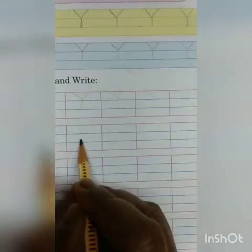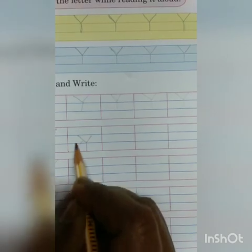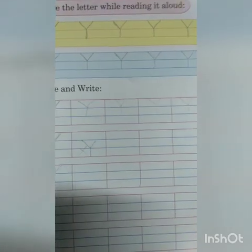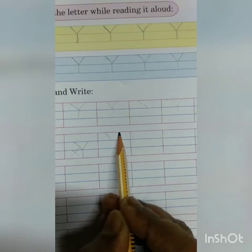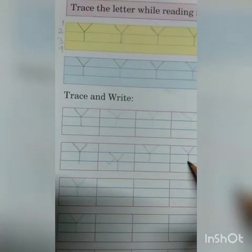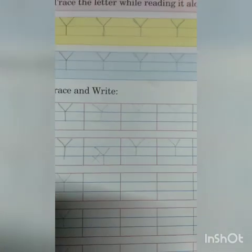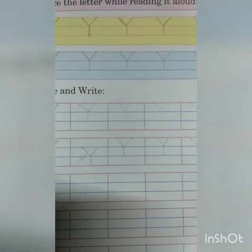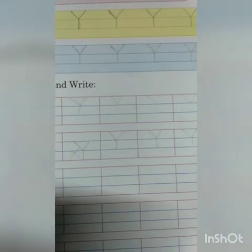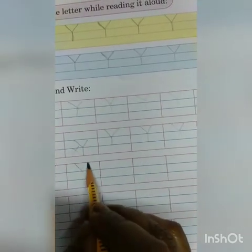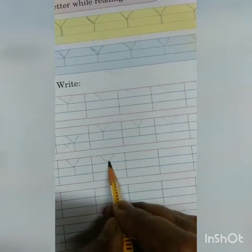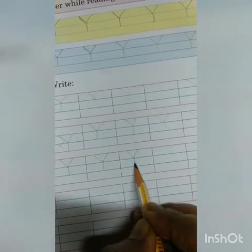Trace it. If you write like this, capital letter Y, this is wrong. You must follow the lines — first line, second line, and third line. So this is your classwork: capital letter Y handwriting. Y is for yoga, Y is for yoyo, Y is for yuk, Y is for yacht, Y is for yok.